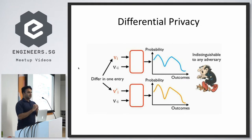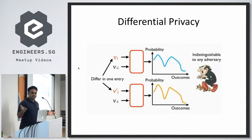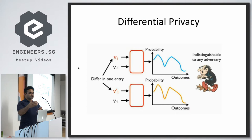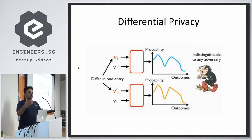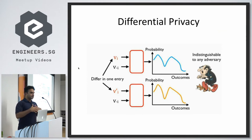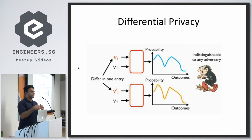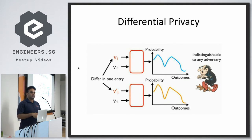Differential privacy concerns itself with the following question. Say I want to study the incidence of diabetes in this audience — I do a survey, collect a database, and ask you to participate by telling me whether you have diabetes or not. If I have the results before I ask you, and then compare them after you responded, I know whether or not you have diabetes because my count will increase by one.